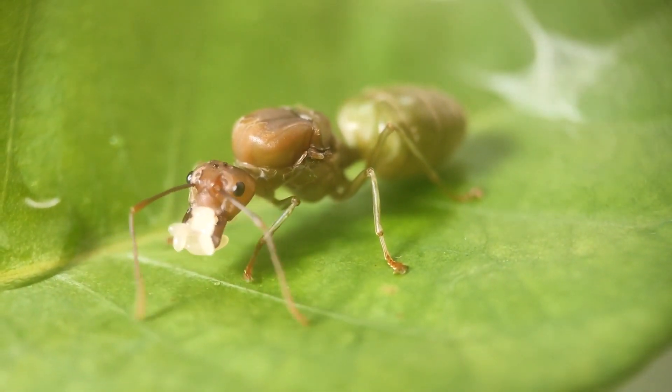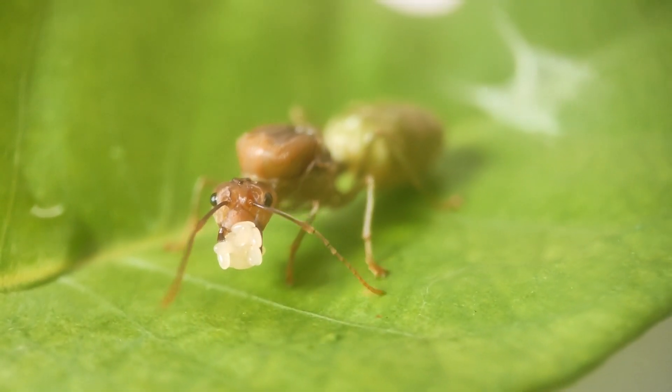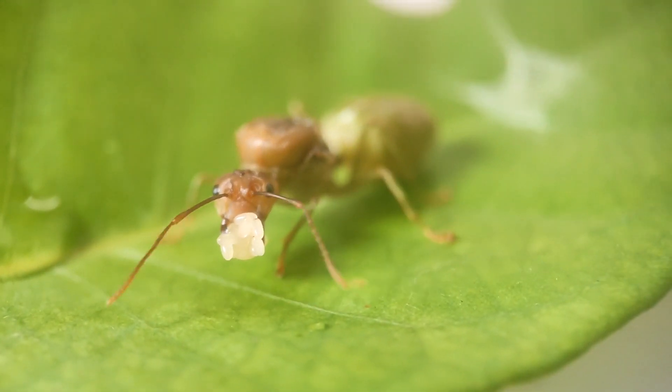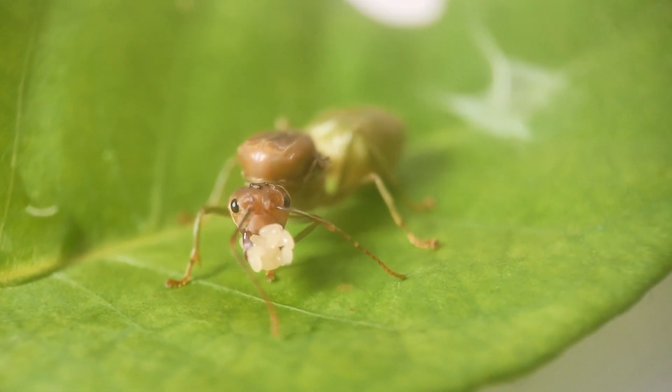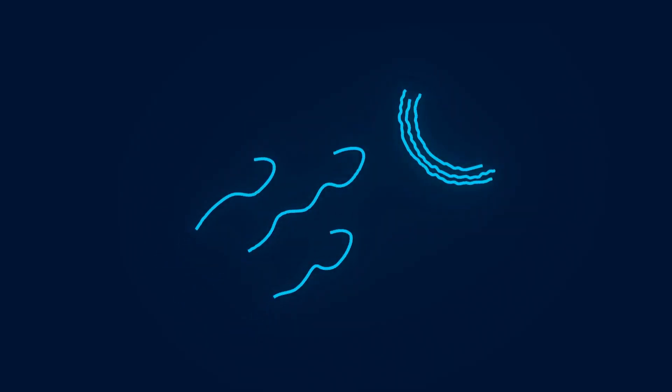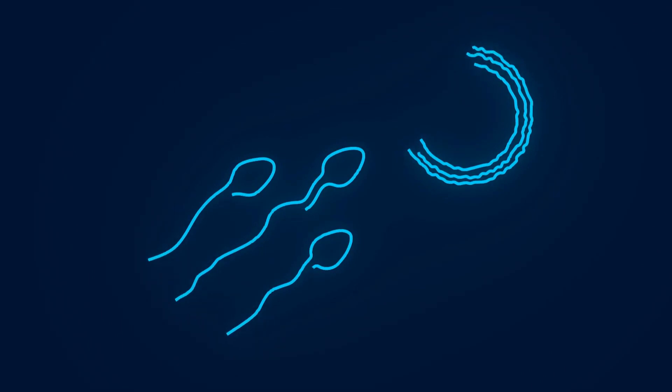Number six, queens focus primarily on reproduction, laying thousands of eggs throughout their lives while workers take care of everything else. Their ability to store sperm after mating lets them keep laying eggs long after their nuptial flight.